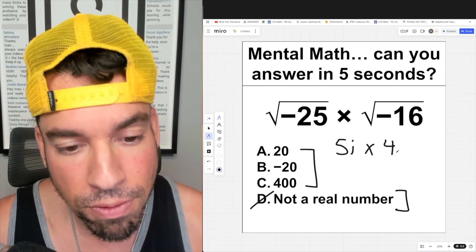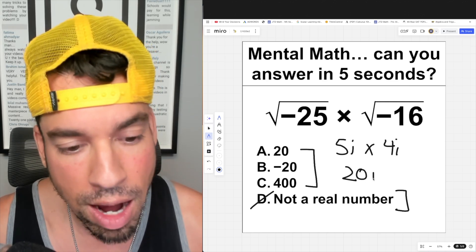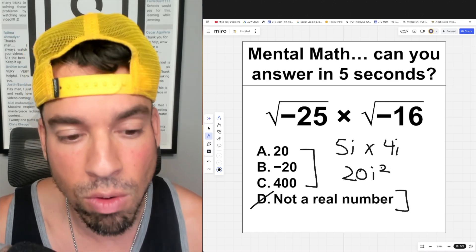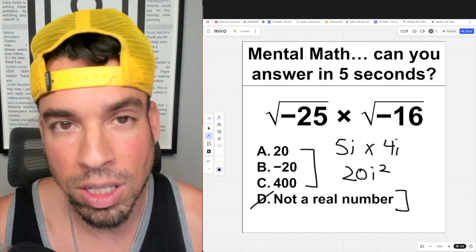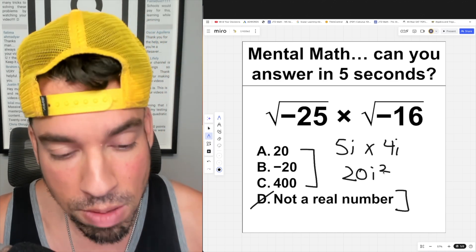When we multiply these two together, we are going to get 20 i squared. Now here's the deal: i squared is actually the square root of negative 1 squared, right? It's an imaginary number. You square the imaginary number, you get negative 1.